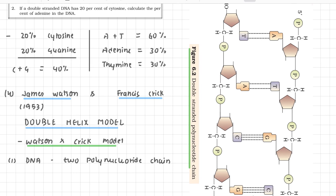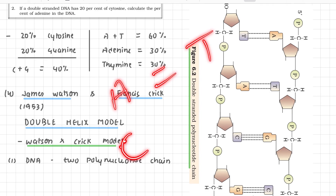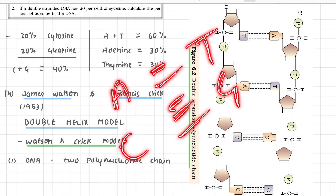The most important feature of the Watson-Crick model was complementary base pairing. Adenine (A) pairs with Thymine (T) via a double hydrogen bond, and Cytosine (C) pairs with Guanine (G) via a triple hydrogen bond. This A-T and C-G pairing is a very important and remarkable feature of the model. Remember, complementary base pairing is one of the key features.